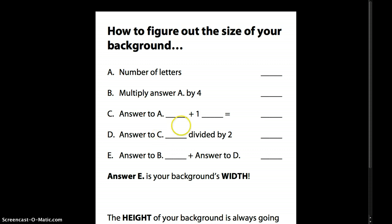Letter D, the answer to C is 8. Divide that by 2. That's 4. Then what you're going to do is take the answer to B which is 28 and you're going to add it to answer D which is 4. So 28 plus 4 is 32.